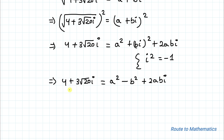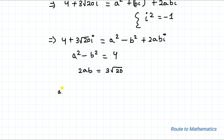Two complex numbers are equal only when their real parts are equal and their imaginary parts are equal. So the real part on the right-hand side must equal the real part on the left-hand side: A² - B² = 4. Similarly, 2AB = 3√20.